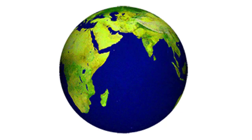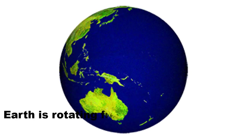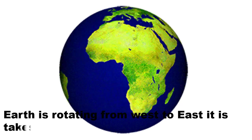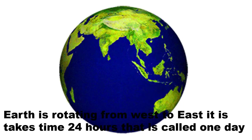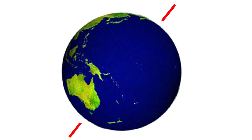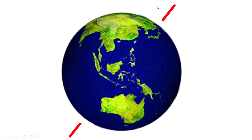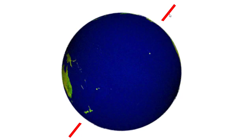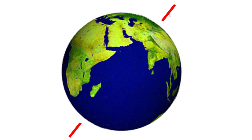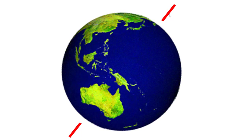It takes 24 hours to complete one rotation, and that is called one day and night. The earth is rotating on its own axis. The axis is an imaginary line. It is tilted at 23 and a half degrees.